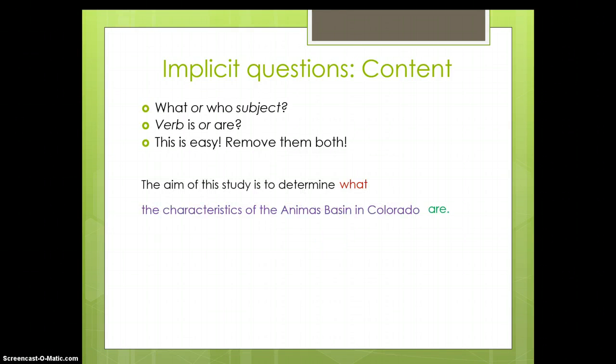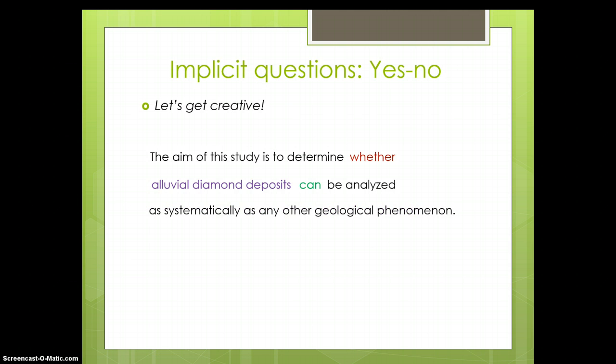Let's try another one like that. The aim of this study is to determine what the characteristics of the Animas Basin in Colorado are. Now, in the indirect question video, you'll recall that we said the aim of this study is to determine what the characteristics are of the Animas Basin in Colorado. And that's one way to make it a little easier to read. But, when we're talking about implicit questions, there's an even simpler option. Just take away the what and take away the are. The aim of this study is to determine the characteristics of the Animas Basin in Colorado.